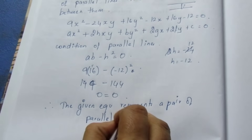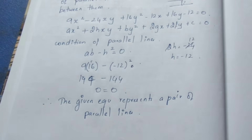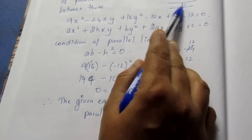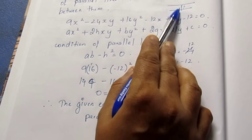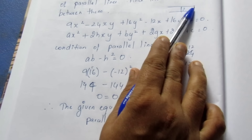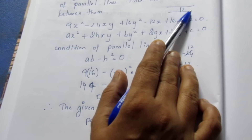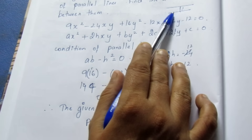Since it is proved to be parallel lines, we will now find the distance between them. We will add constants c₁ and c₂. If we have two equations, the distance formula is (c₁ - c₂) divided by the square root of (a² + b²).